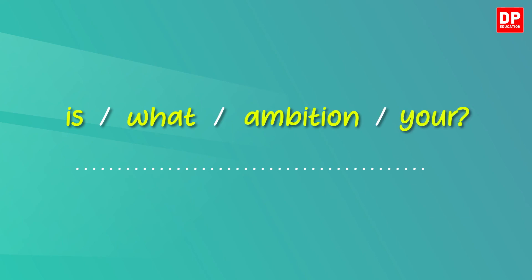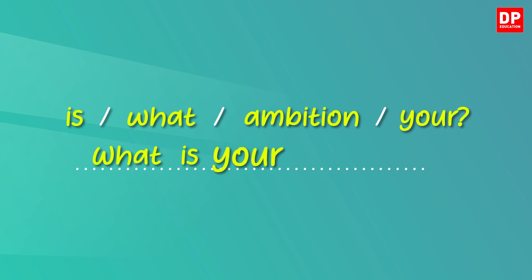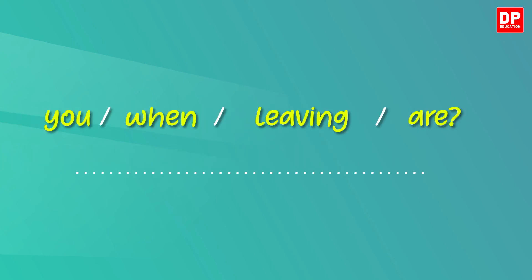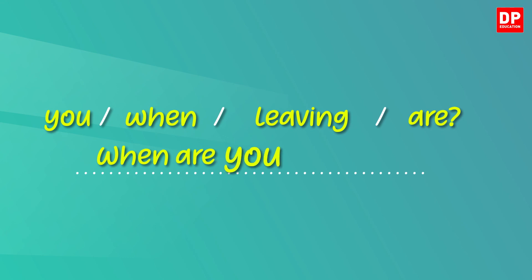Now the fourth — how do you arrange the words? It should be: what is your ambition? Again, you have the WH question word, the be verb 'is', and then the noun phrase 'your ambition'. Now how do you do the last one? You have to write: when are you leaving? So you have the WH question word, the be verb, the subject, and the verb.